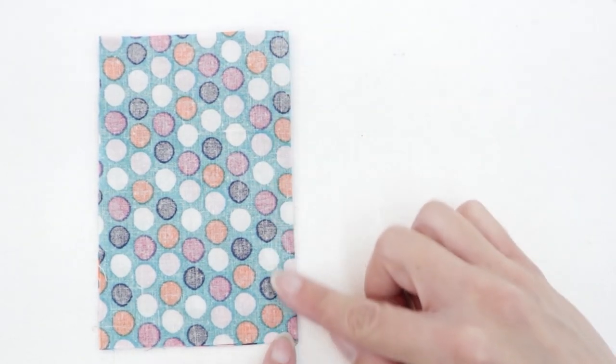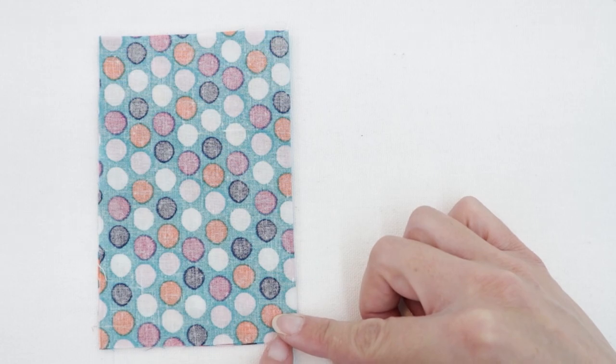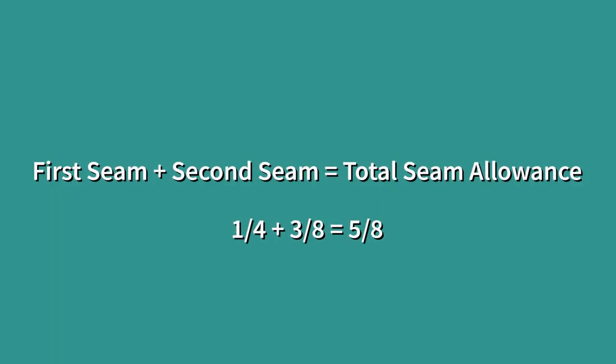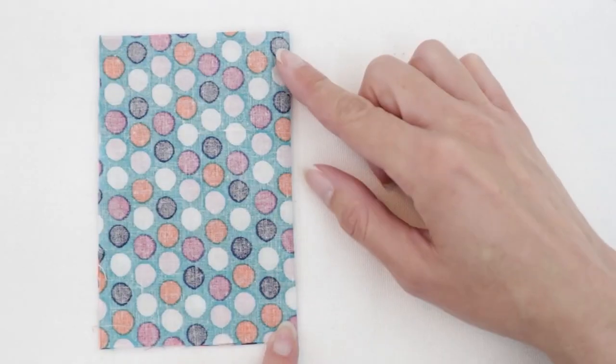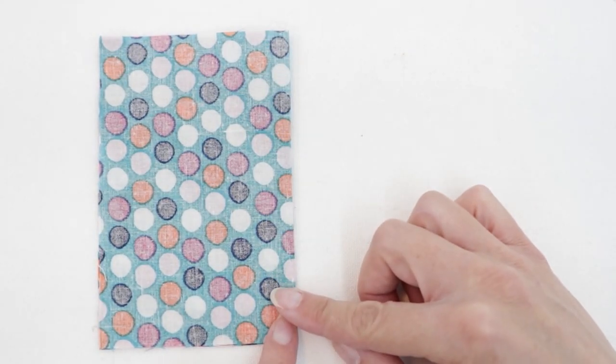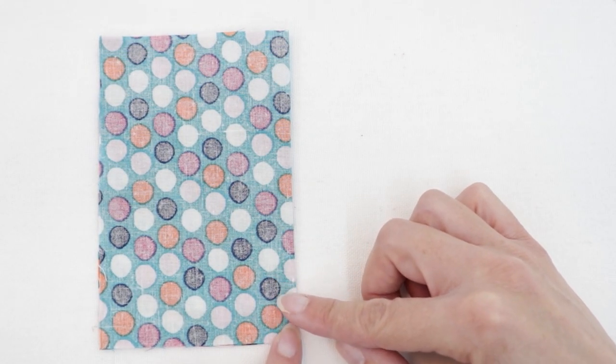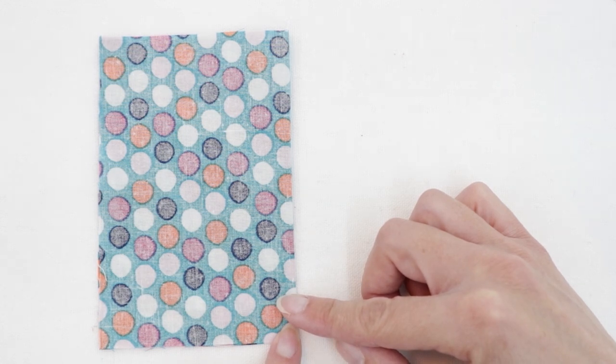Usually the standard is to use a 3/8 inch seam allowance. Or if you're worried that your trimming and pressing in the previous steps are not exact, you may want to use a little larger seam allowance such as a half an inch.